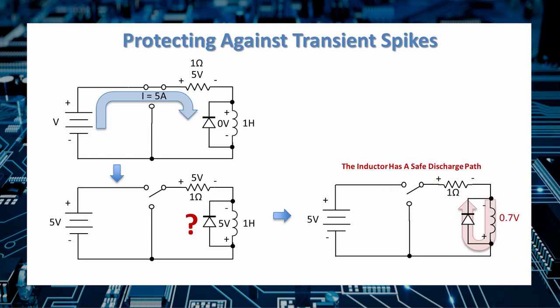The best way to protect against inductive transient spikes is by including a reverse bias diode across the inductor. This way, when the voltage across the inductor changes polarity, the current will have a path by which it can discharge.